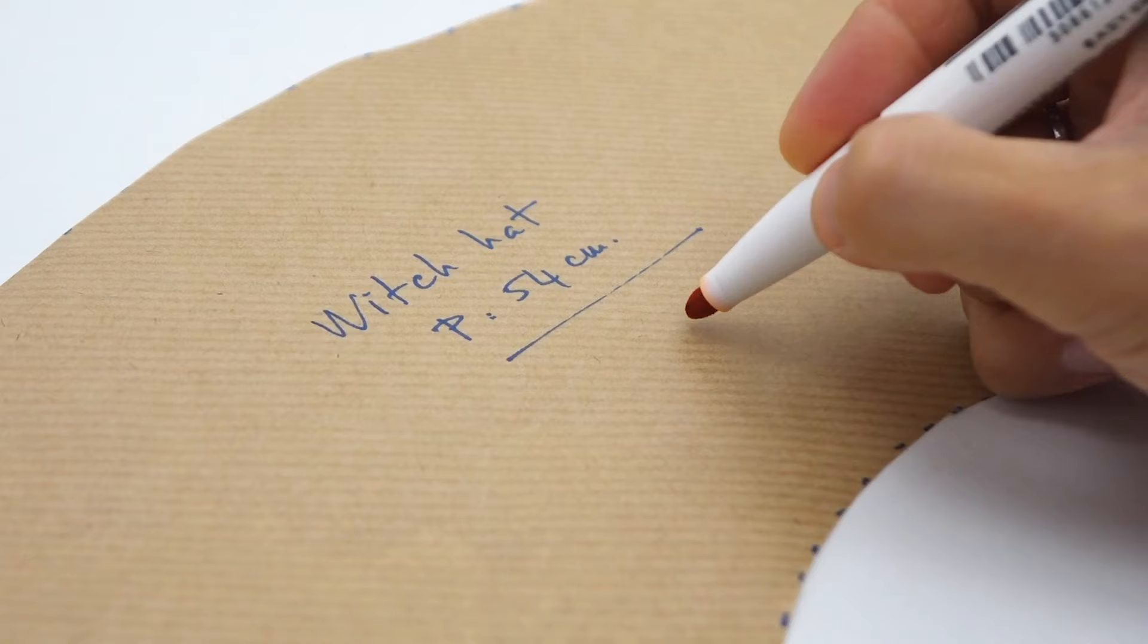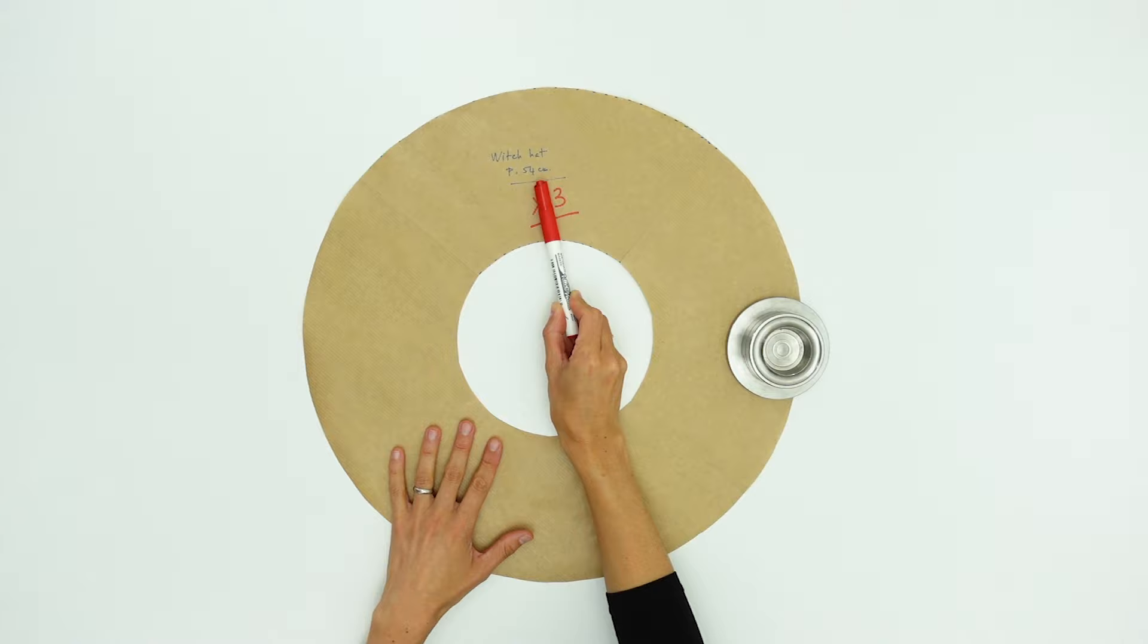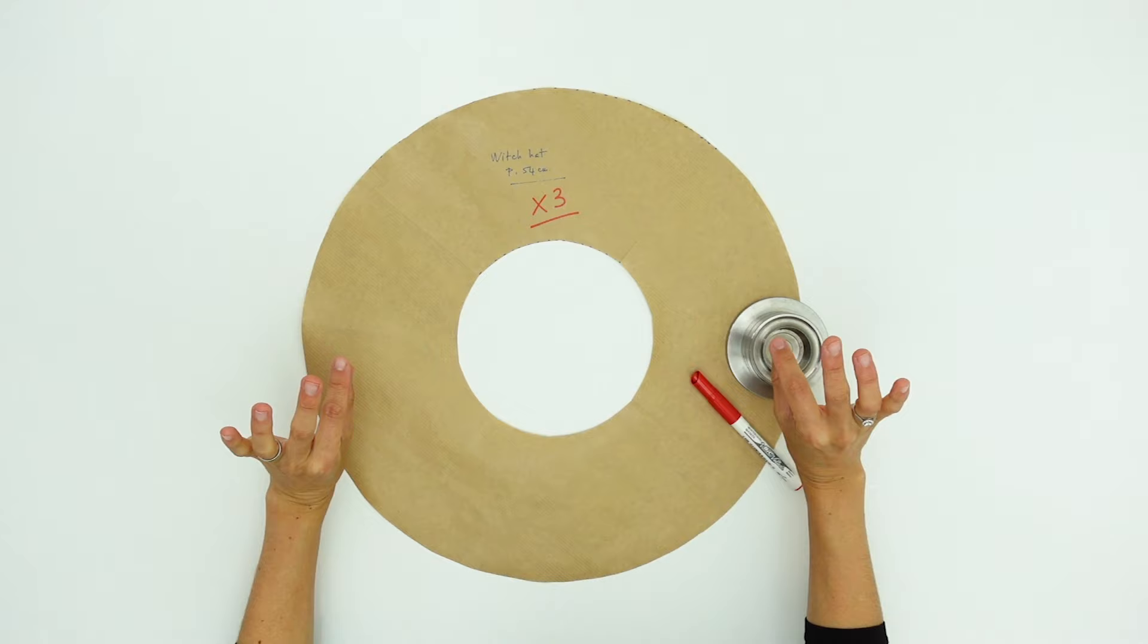All right, our first pattern piece is ready. I indicate that it is a hat for a scary witch whose head size is 54 cm and that she should have to cut this piece 3 times. Once for the top of the brim, once for the bottom and once for the lining to make it stiffer.